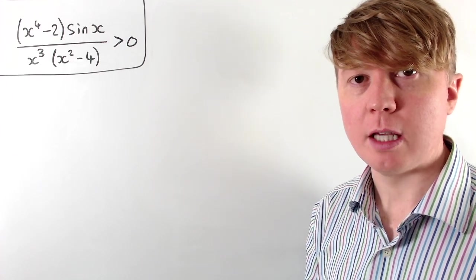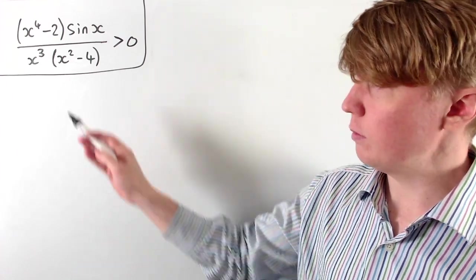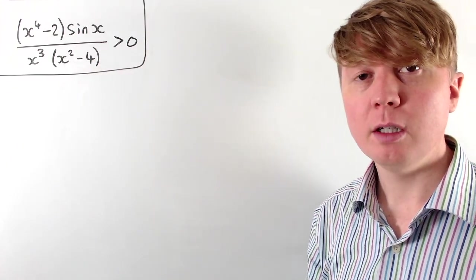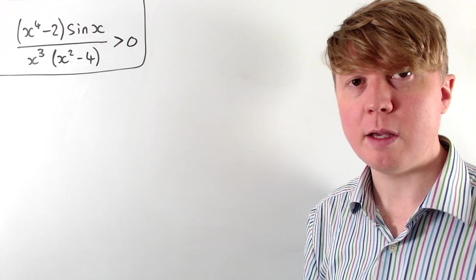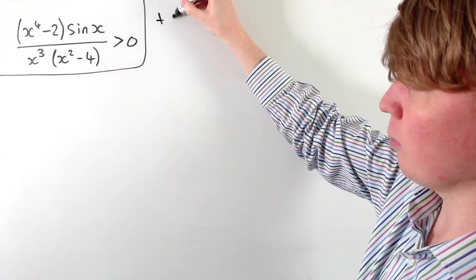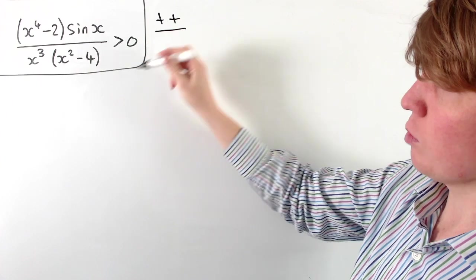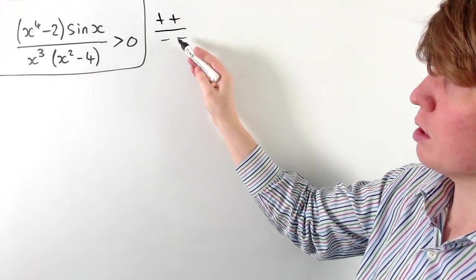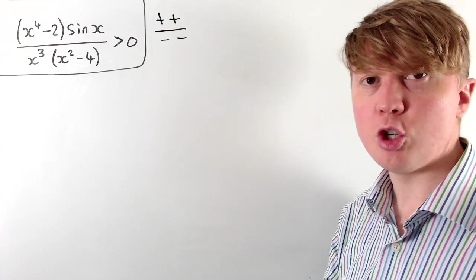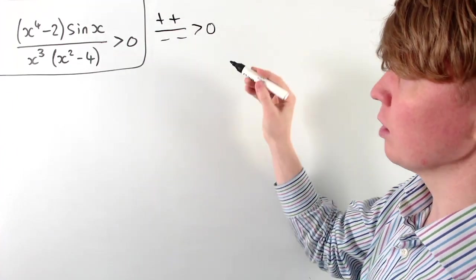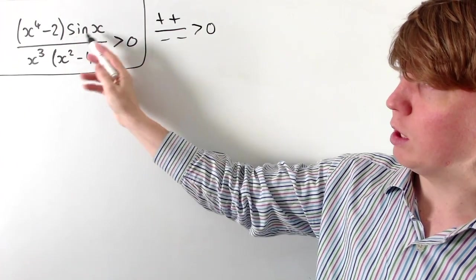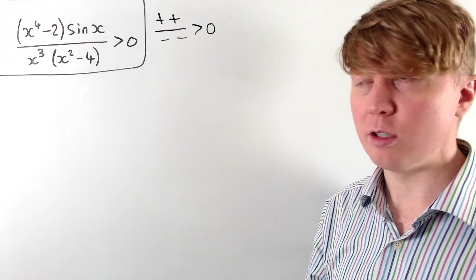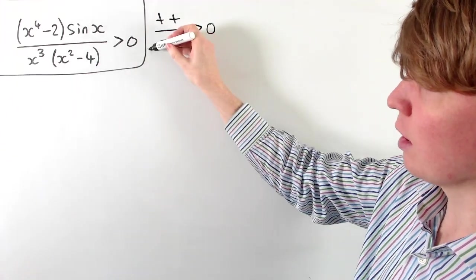We're going to solve this inequality, and our method involves looking at each of these different pieces individually, seeing where they're positive and negative. For example, if we find the top two terms are both positive and the bottom two terms are both negative, this tells us that the overall fraction would be positive. So if we know when each of these individual pieces are positive and negative, this will tell us when the overall inequality is satisfied.